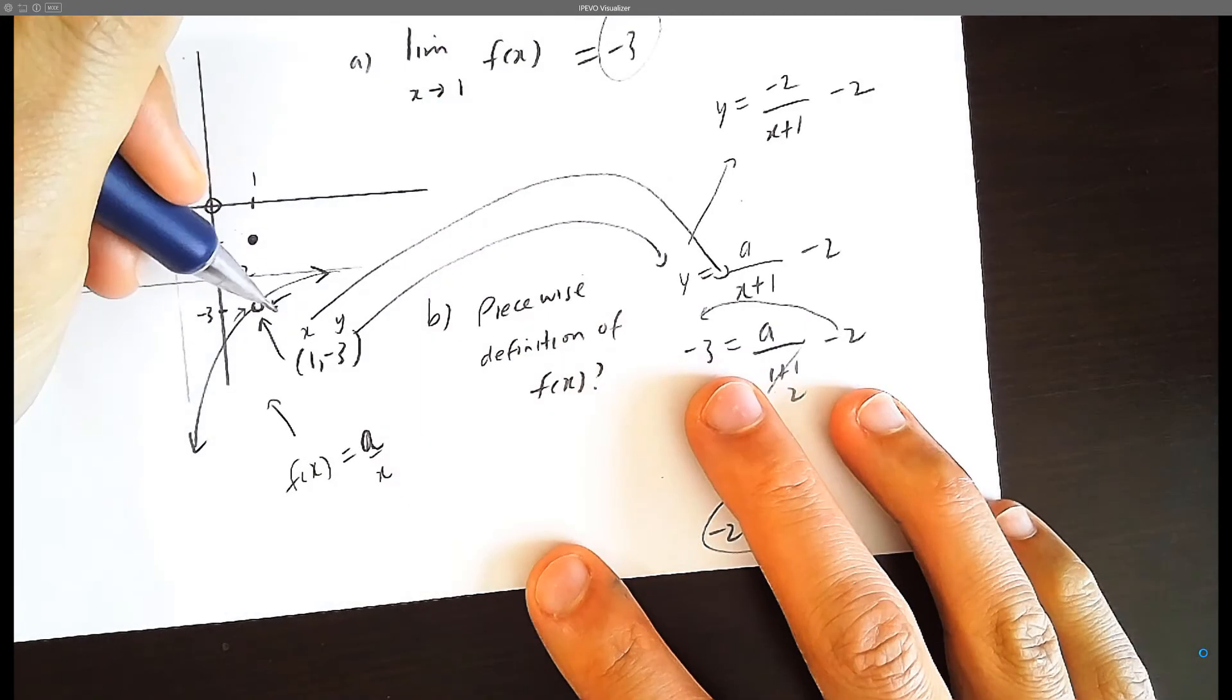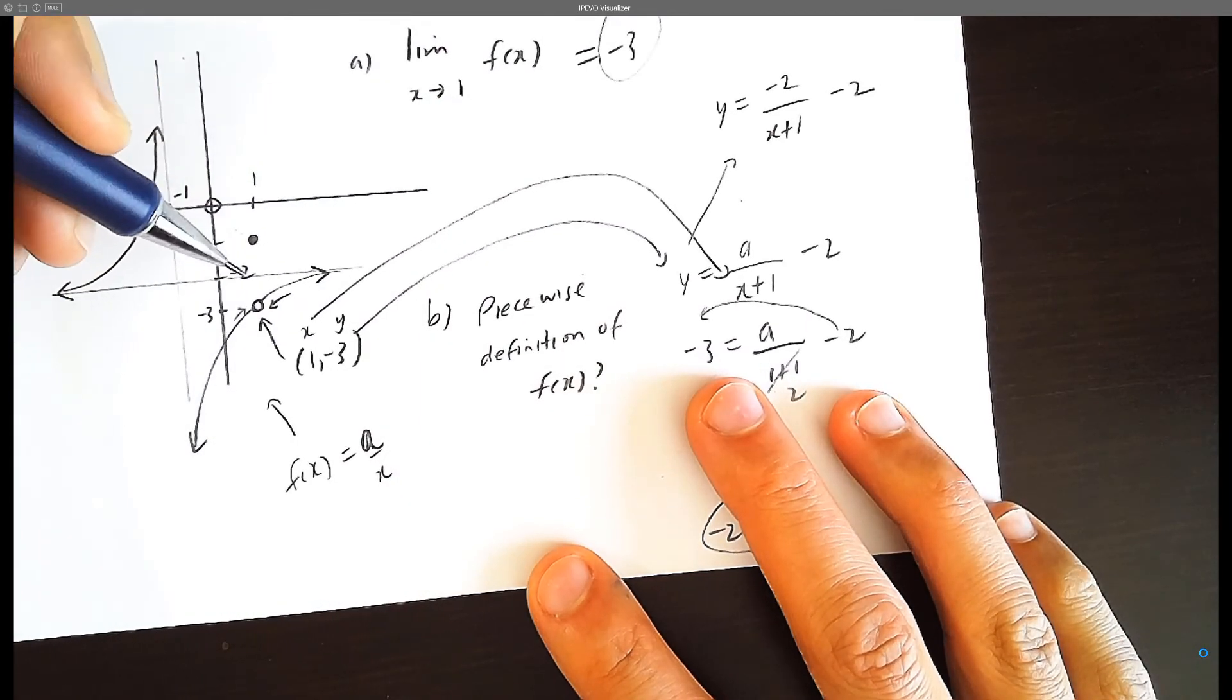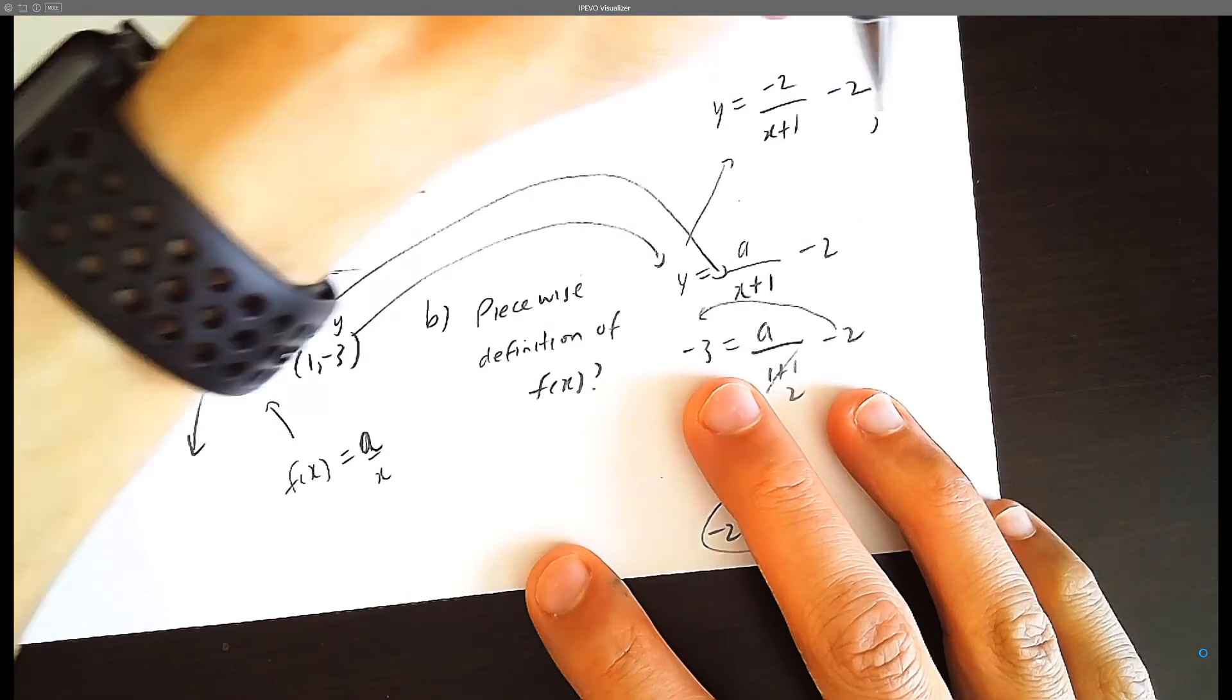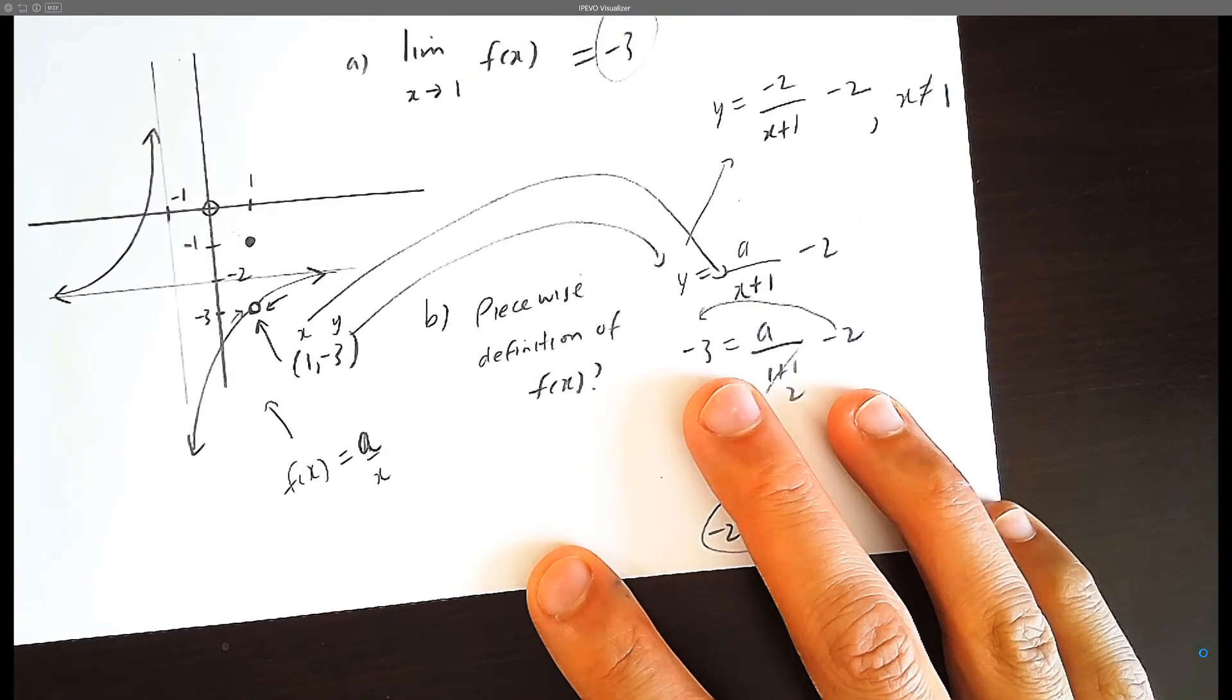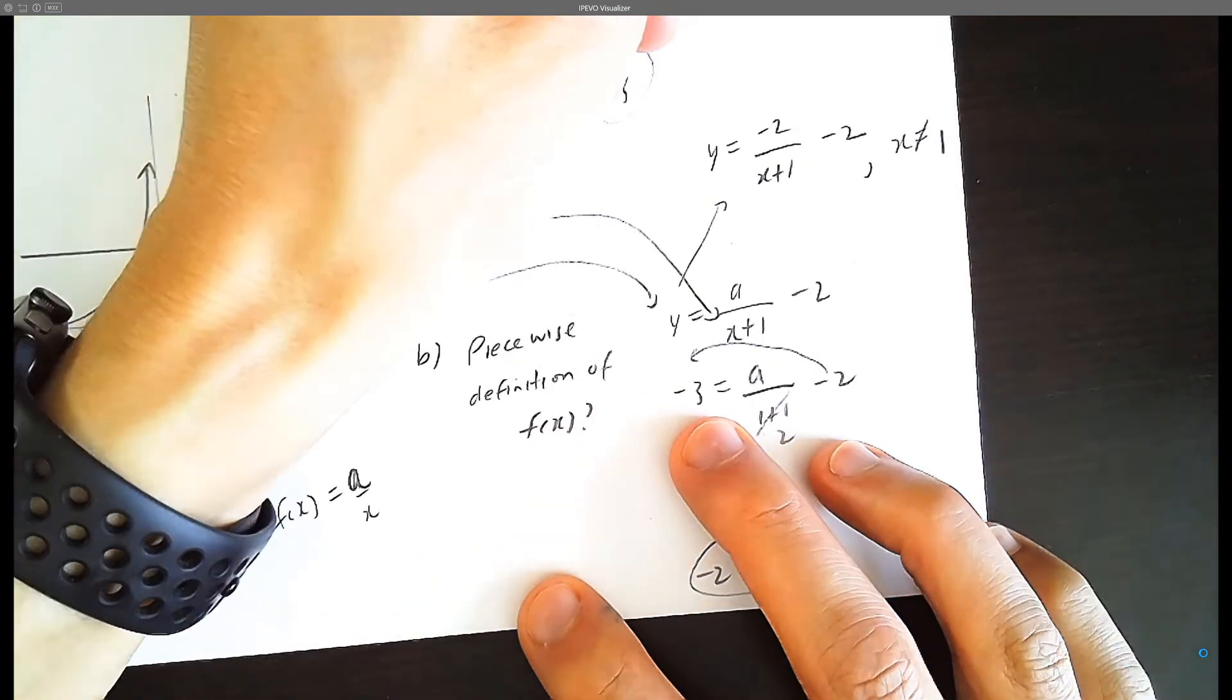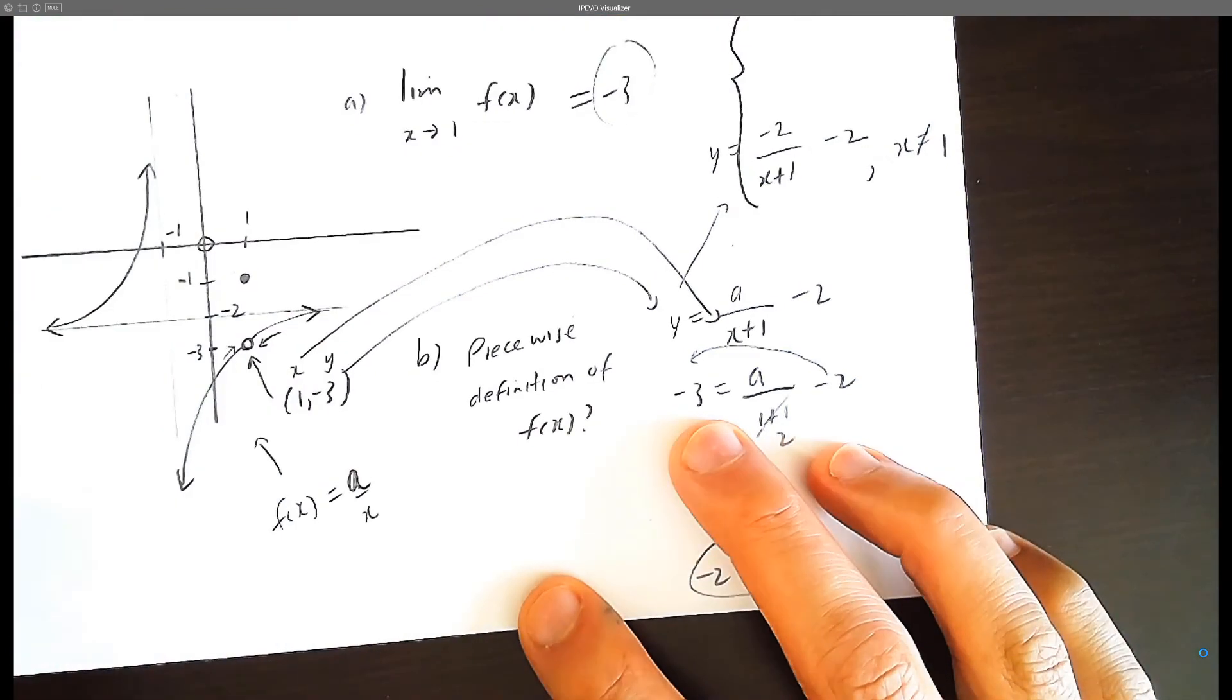Now unfortunately, there's a hole here. So we're going to say comma x does not equal 1. So that's part of this piecewise function. So we're going to put a nice little piecewise curly brace there.